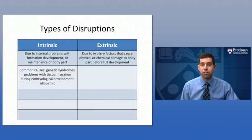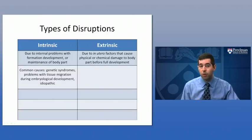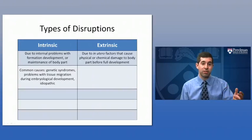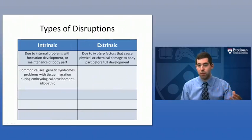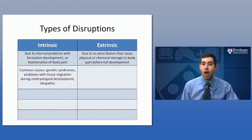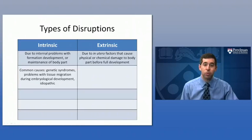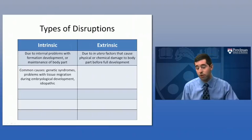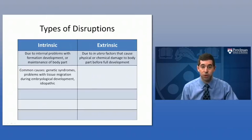Common causes for intrinsic findings may be genetic syndromes or problems with tissue migration. Remember, somites form the tissues that ultimately become the mesenchyme — the soft tissues, bones, and blood vessels of the upper limb — and they have to migrate from essentially the area of the spine to the upper limb. Problems with that migration could result in limb malformations. Or they could be idiopathic, meaning we're not really sure what the cause is.